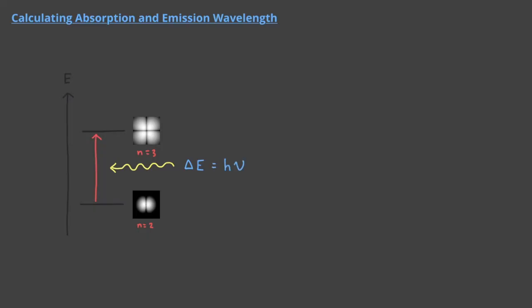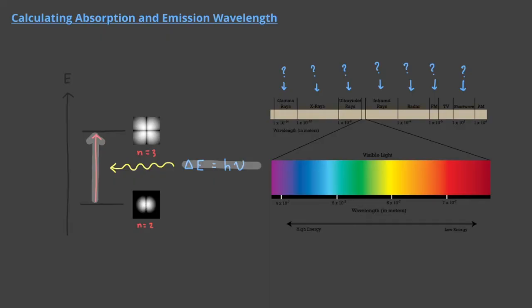This energy change is represented by this arrow here. This arrow represents the light energy being absorbed by the n equals 2 wave that allows the wave to transform into an n equals 3 wave. It is a change in energy. We can actually figure out what type of light is being absorbed by the electron that allows it to undergo this transformation by calculating the wavelength.